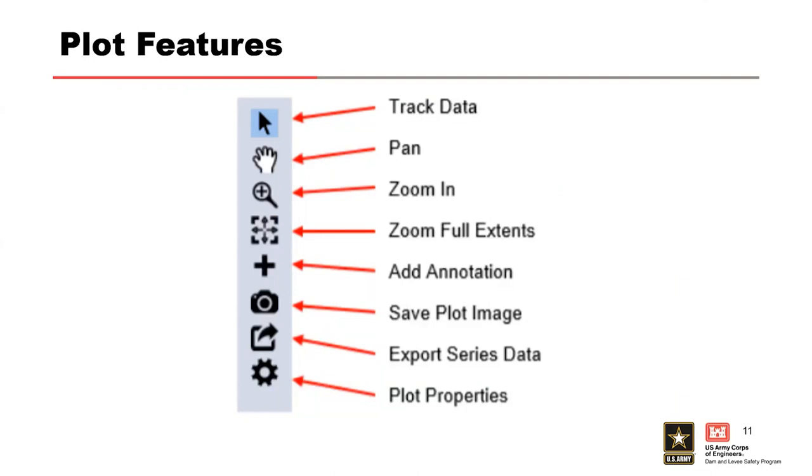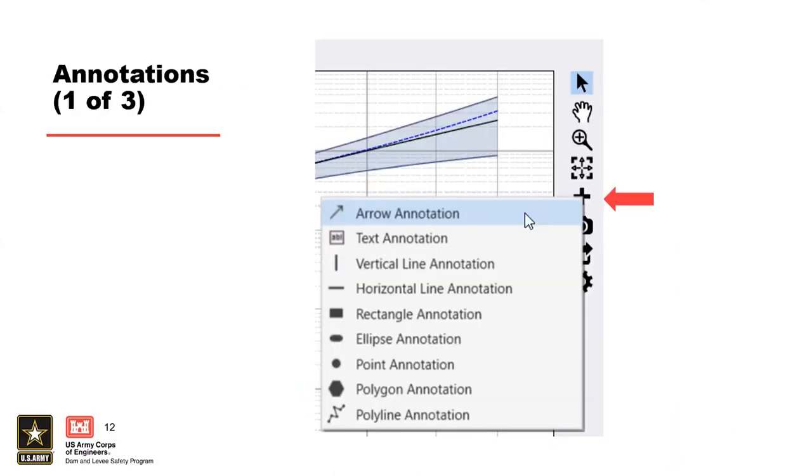They include the ability to add annotations and save the plot as an image, which I already mentioned. Annotations is a neat feature. The annotation menu has multiple options that can be used to highlight important features of the plot, and some common ones include arrow, text, and horizontal line.